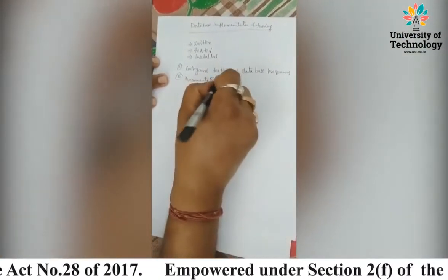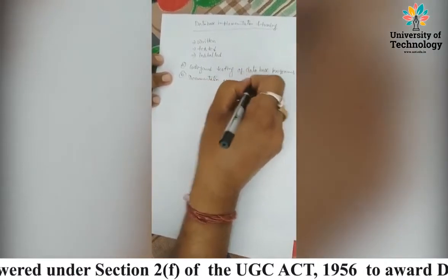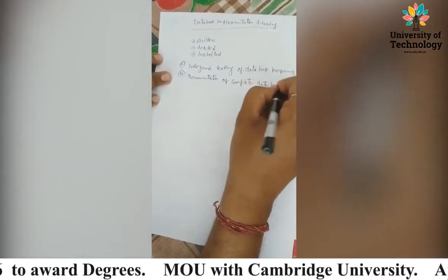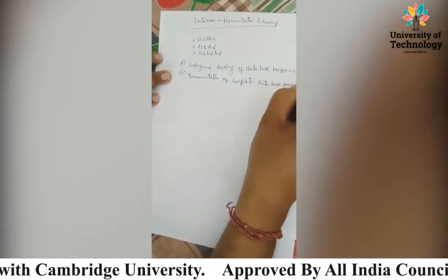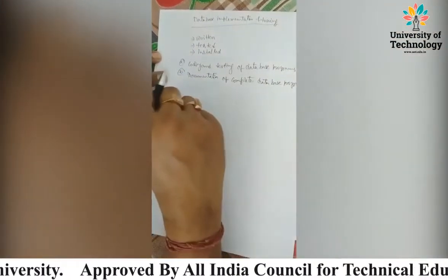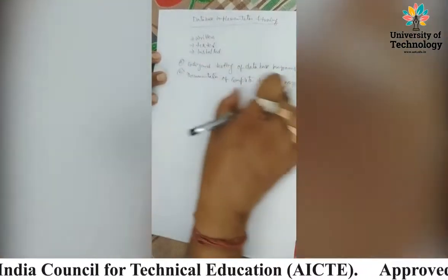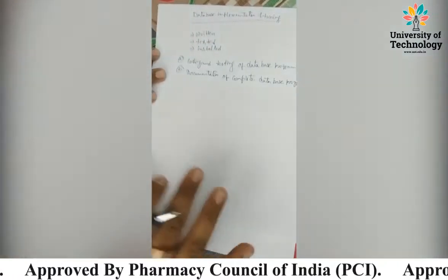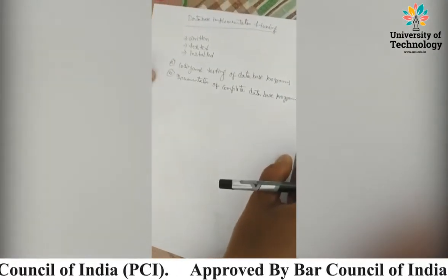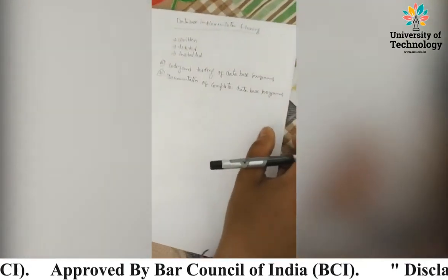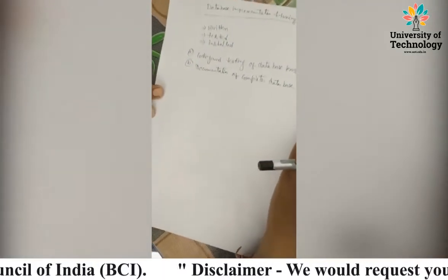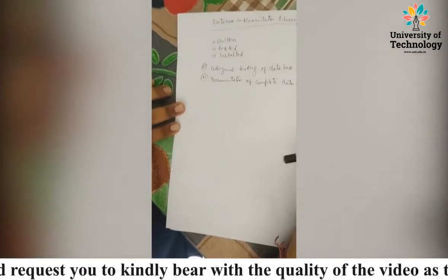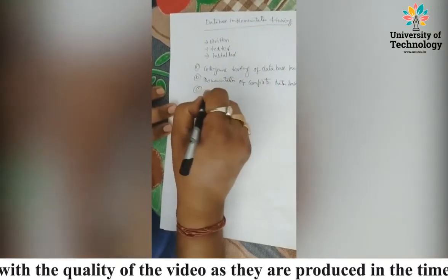That was the first stage. The second stage is documentation — documentation of complete database programs. Whatever database we have designed, we will prepare complete documentation. Documentation means we take a copy and write down how each designing part was completed and how we will use it, because users need full documentation submitted to them so that using the database becomes easy.